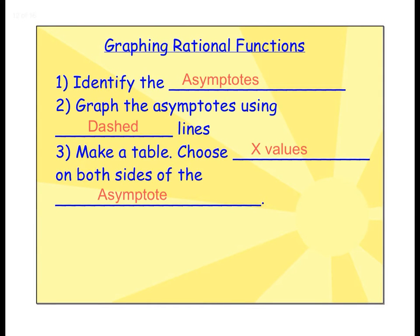On to graphing - a couple steps that will make your life easier. Step one: identify the asymptotes, which we just practiced. Step two: graph the asymptotes using a dash line to remind us they exist and that we don't cross those lines. Step three: make a table, choosing x values on both sides of the vertical asymptote.